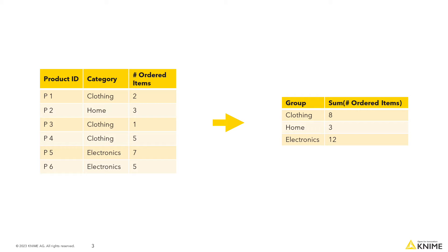The column used for the aggregation is called the Group or Category Column. You can then select a certain aggregation method — in this case, the sum — to be performed on one or more aggregation columns, in this case the ordered items.